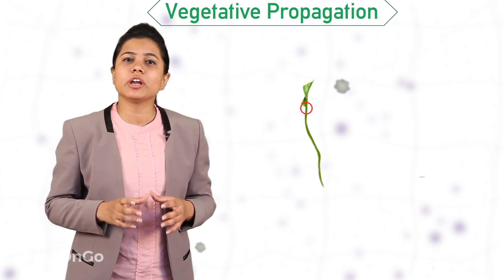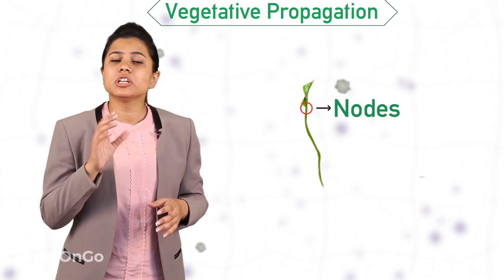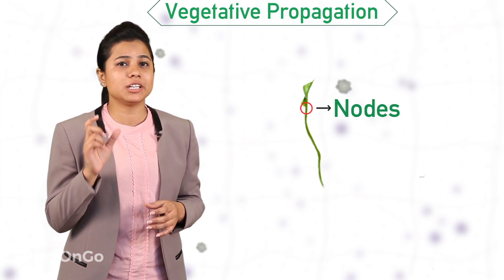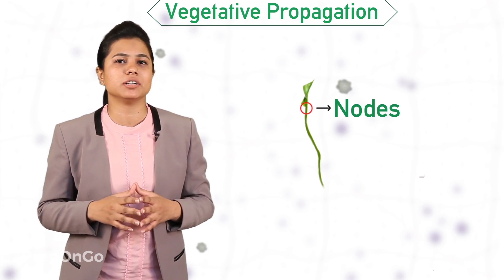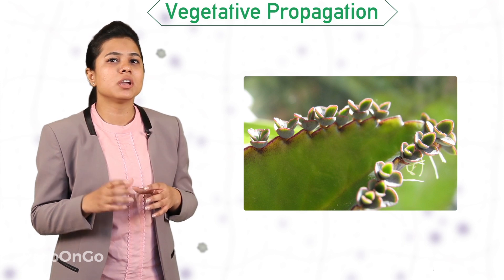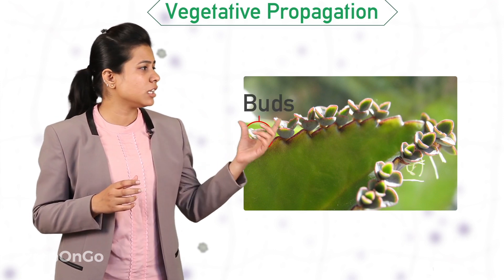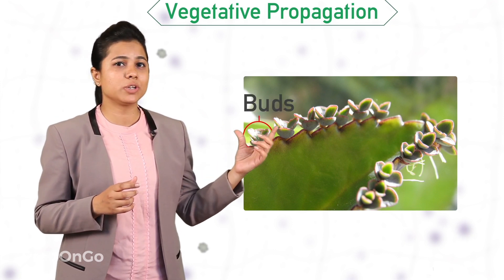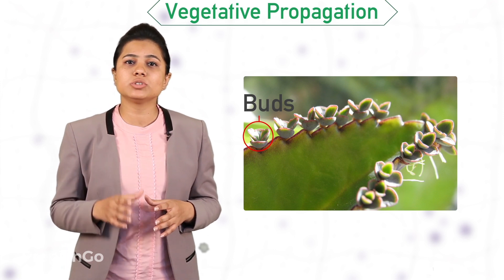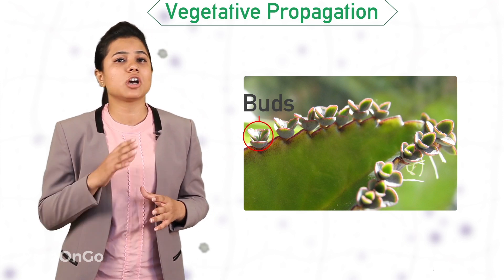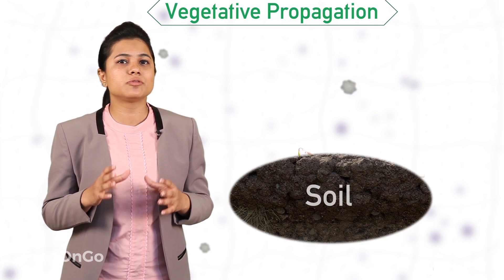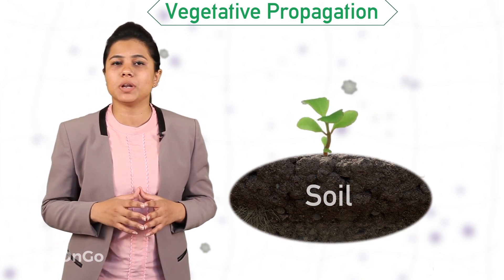These growing points are called nodes. Nodes are also present in the leaves of certain plants — for example, the bryophyllum plant. It has small buds on the leaves, produced in the notches along the leaf margin. When these buds fall on the soil, they grow into a new plant.